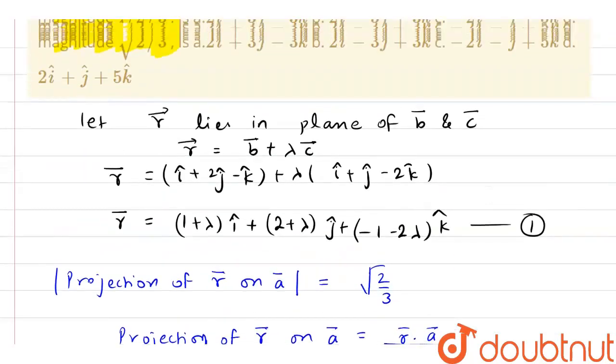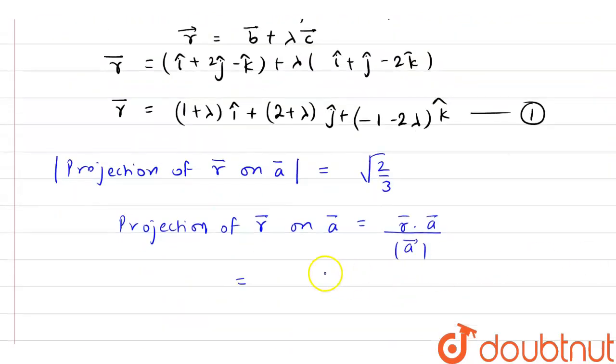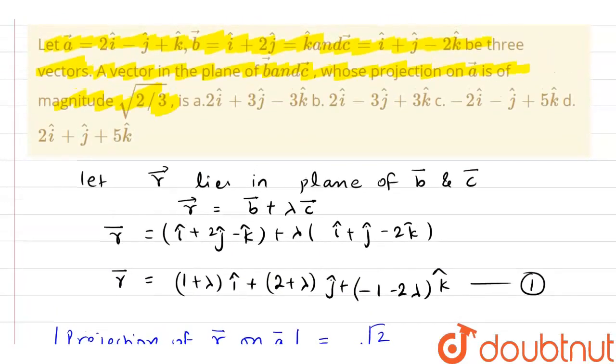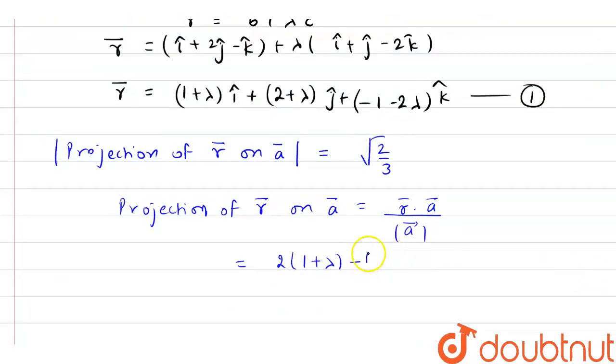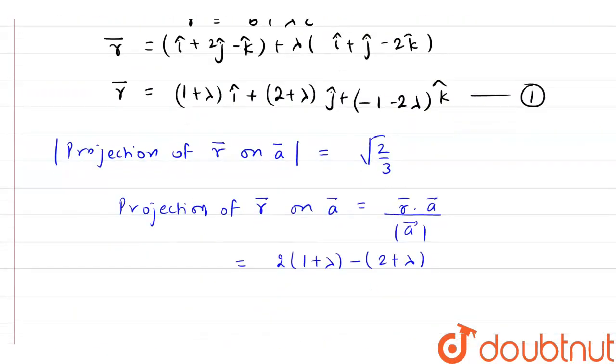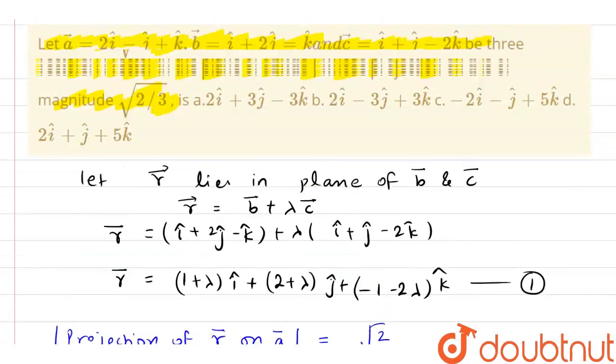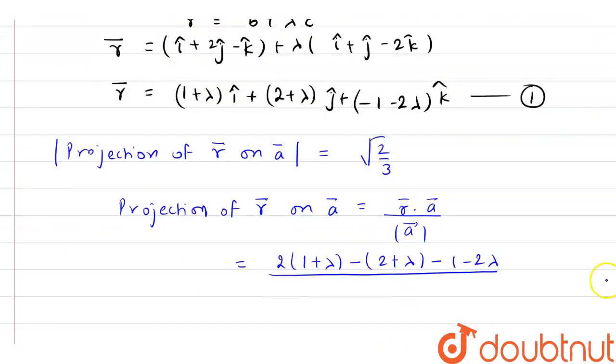Now if I dot it with a, then we have 2 into 1 plus lambda and we have minus 1 into 2 plus lambda, and we have 1 into minus 1 minus 2 lambda. So we have minus 1 minus 2 lambda divided by magnitude of a, and what is the magnitude of a? 4, 1, 5, we have 6 here, so this is root 6.